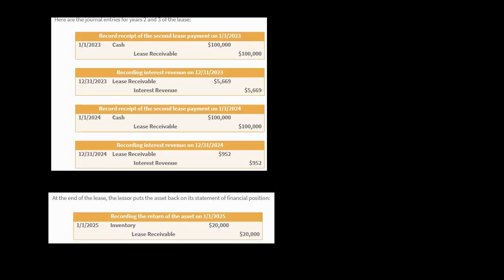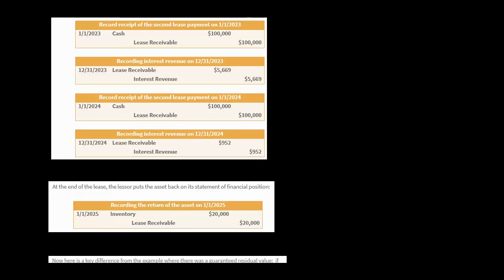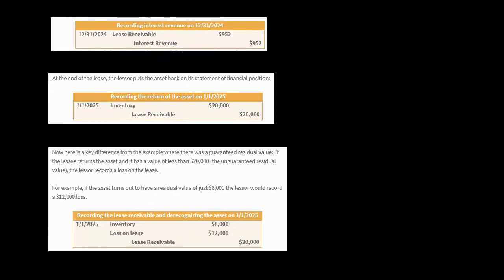At the end of the lease, if the lessee returns the asset to the lessor, the lessor is going to put it back on their statement of financial position — back in their inventory. Remember, the lessor had thought that the asset was going to be worth $20,000. So if it in fact is worth $20,000 at the end of the lease, when they get the asset back, the lessor will increase their inventory account by $20,000 and reduce their lease receivable account by $20,000, so the lease receivable goes to zero. But what if it's worth less than that? Here's a hypothetical.